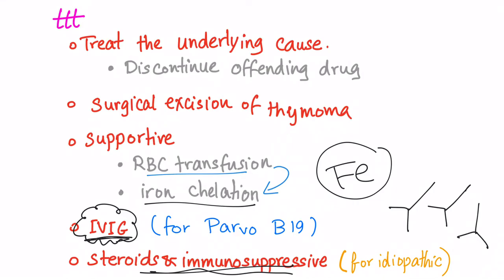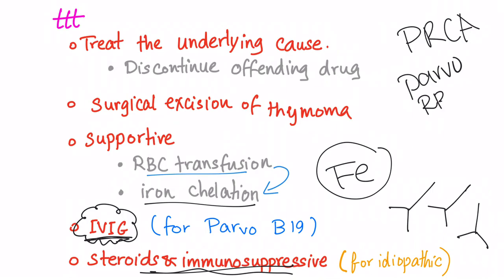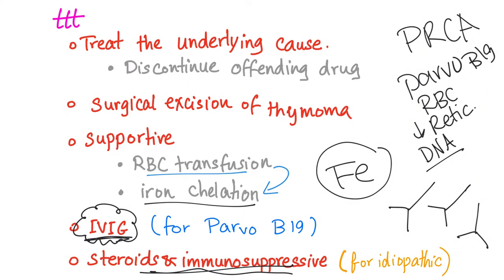That was the story of pure red cell aplasia. Do not forget: pure red cell aplasia, Parvovirus B19, only the red blood cells are affected, reticulocytes are decreased, and the most accurate test is PCR for DNA of Parvovirus B19. See you in the next video!